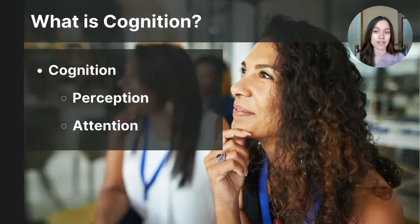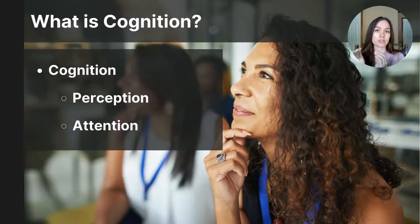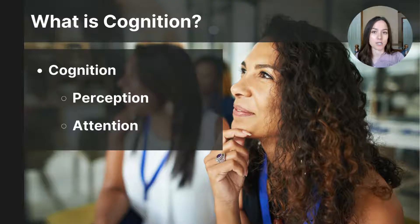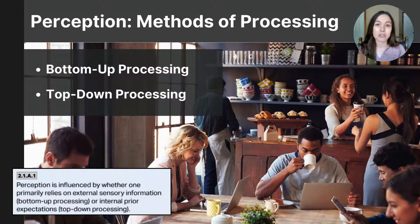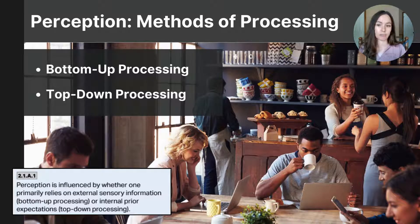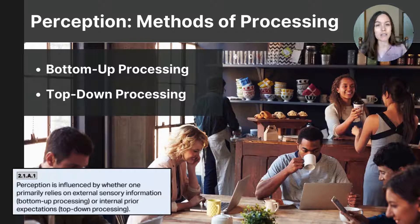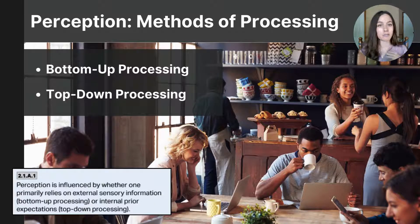Perception is a key cognitive process that involves organizing and interpreting sensory information. Attention involves focusing mental resources on a specific set of information, allowing us to prioritize and manage the vast amount of sensory information we receive. In unit one, you learned about the senses — how sensory receptors detect information and transduce that stimulus energy into electrical impulses carried to the brain. In this unit, we focus on the second part: perception, the process by which our brain interprets and organizes that sensory information. Normally, sensation and perception blend seamlessly together, but separating them helps us better understand how we process information.